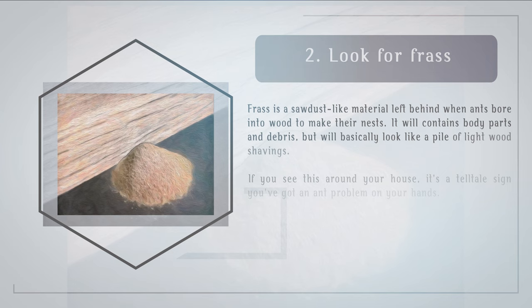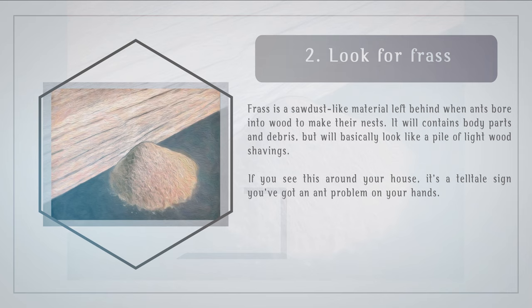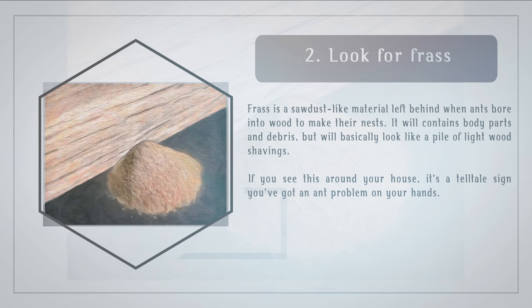Step 2: Look for frass. Frass is a sawdust-like material left behind when ants bore into wood to make their nests. It will contain body parts and debris, but will basically look like a pile of light wood shavings. If you see this around your house, it's a telltale sign you've got an ant problem on your hands.